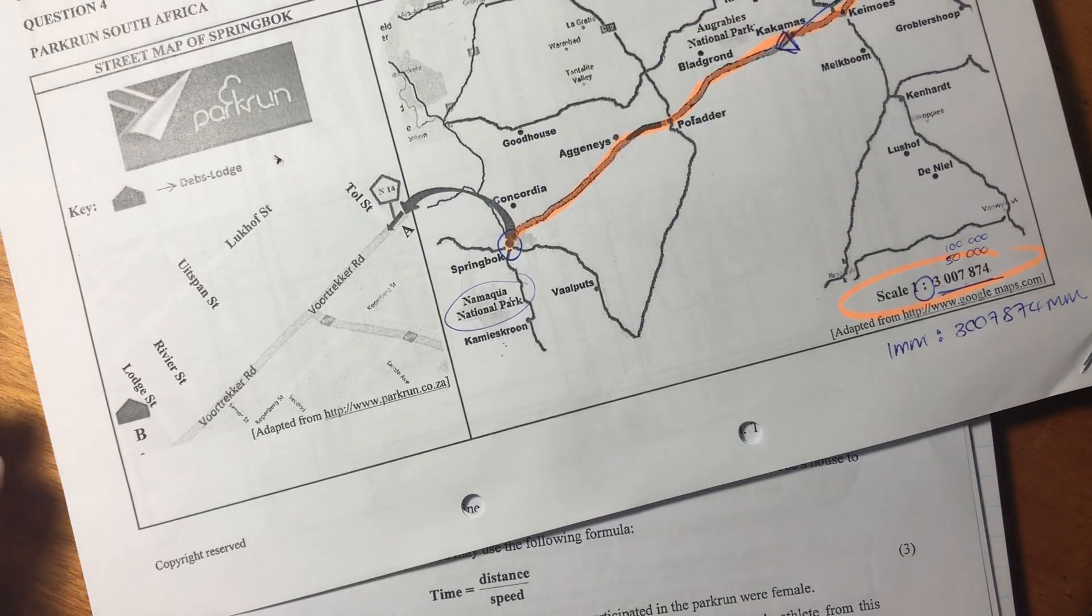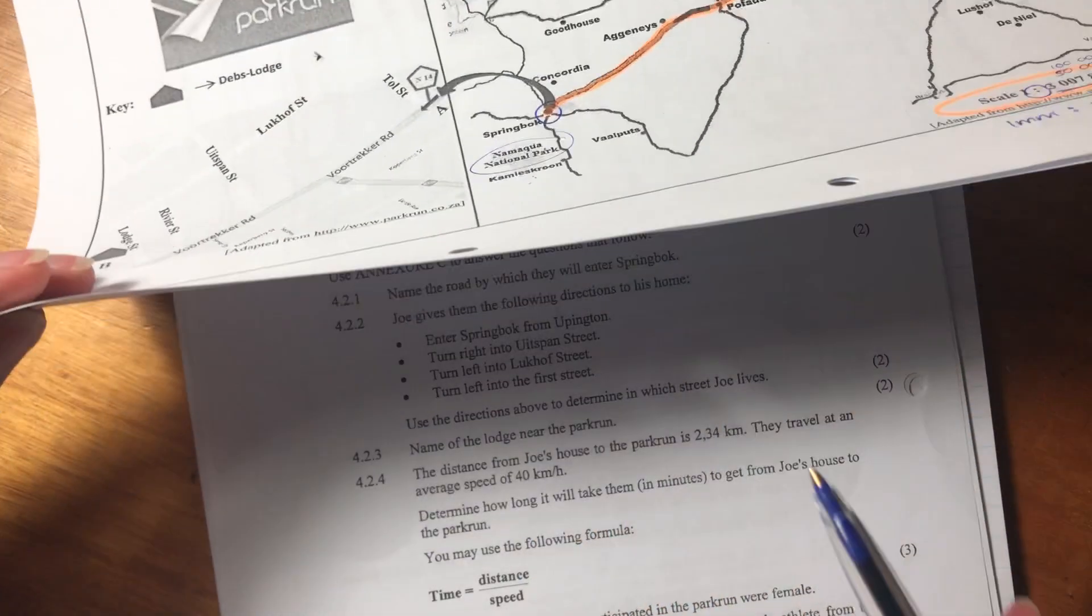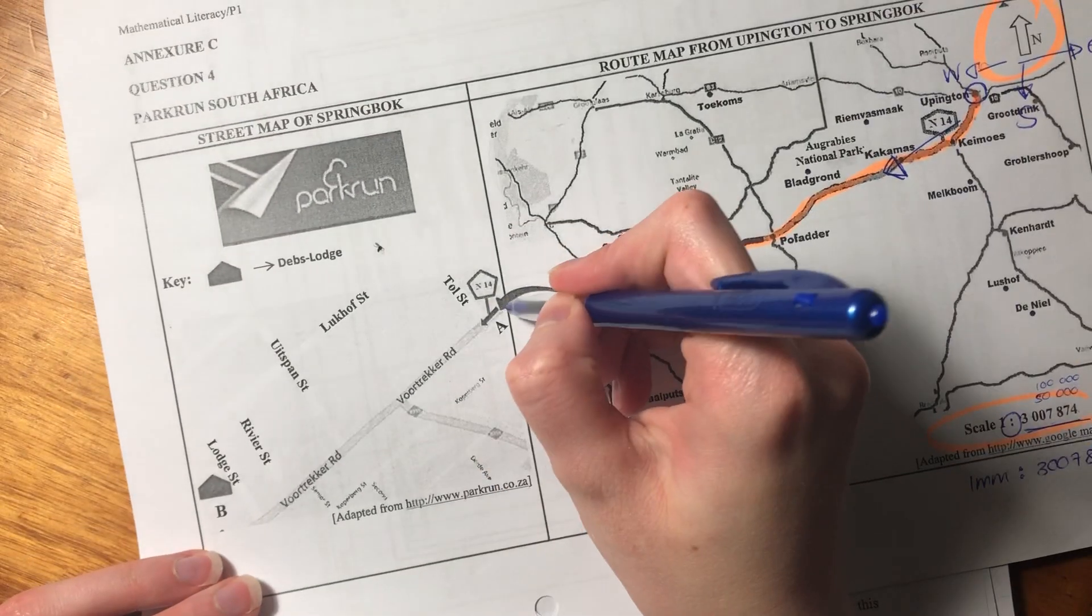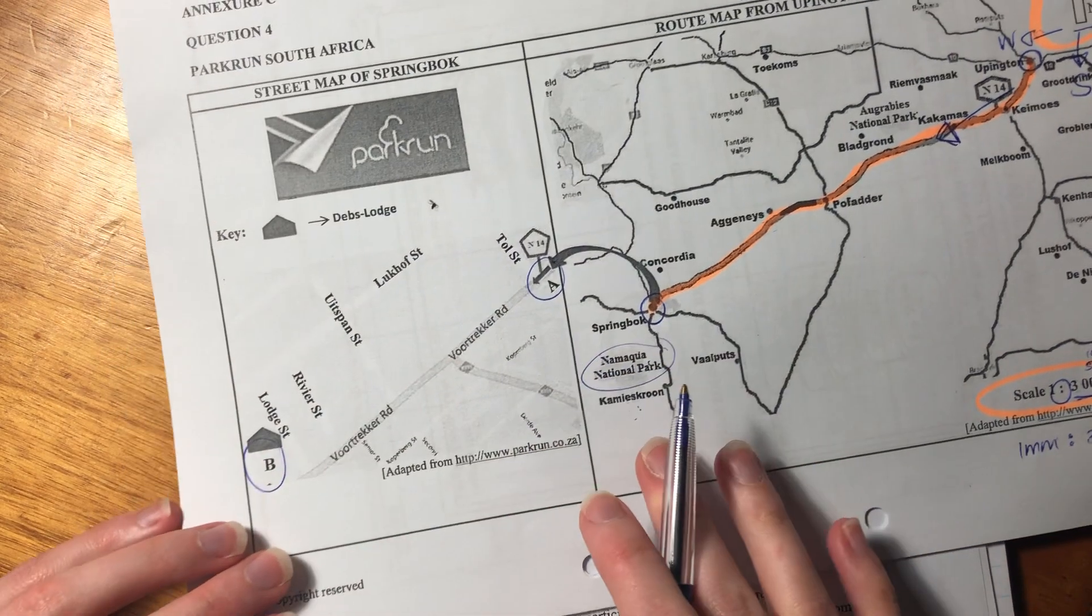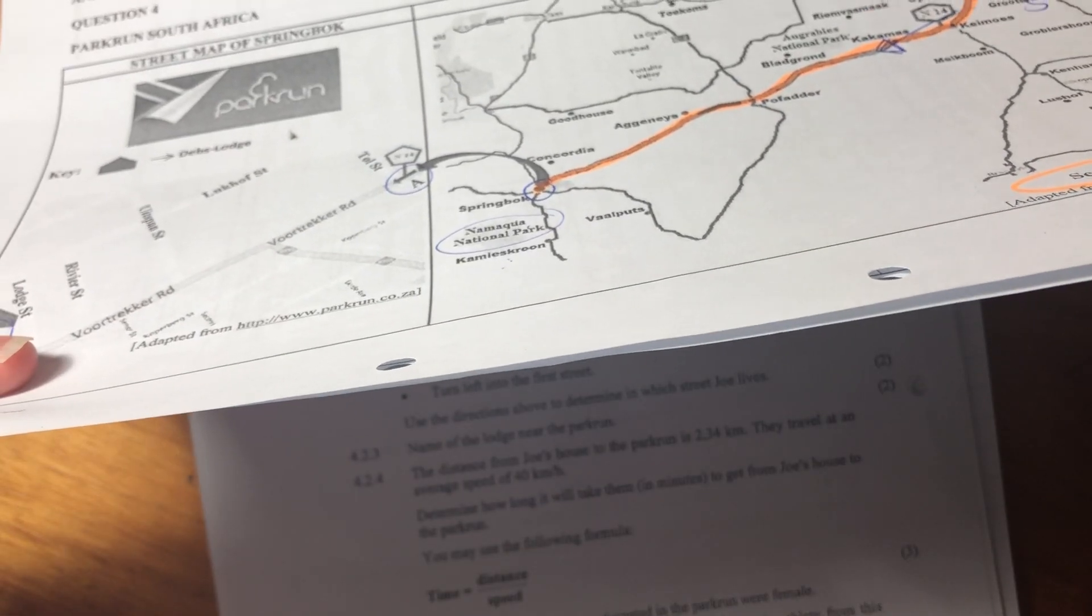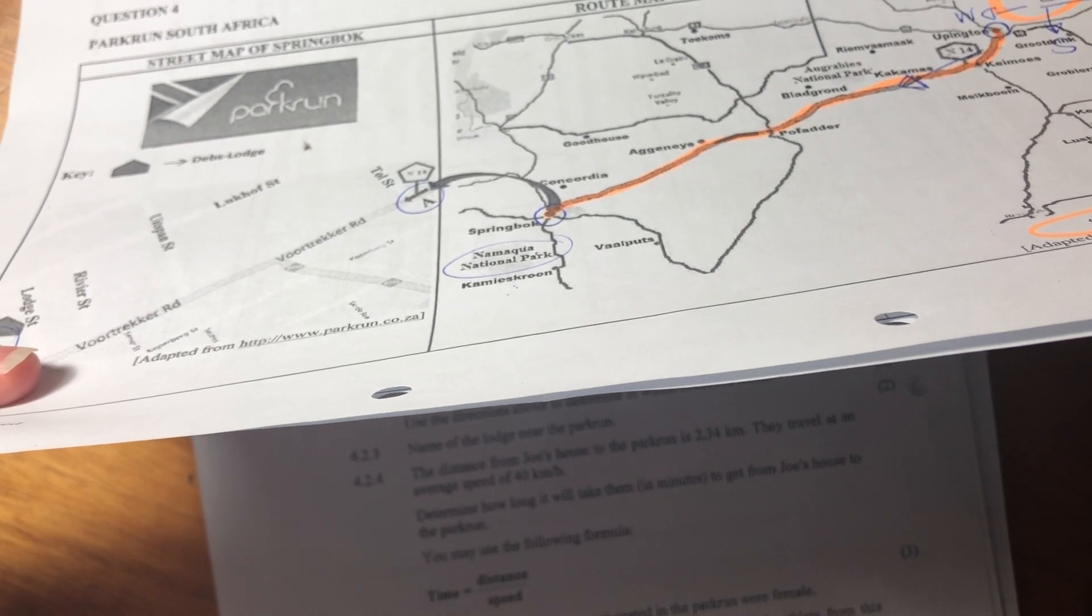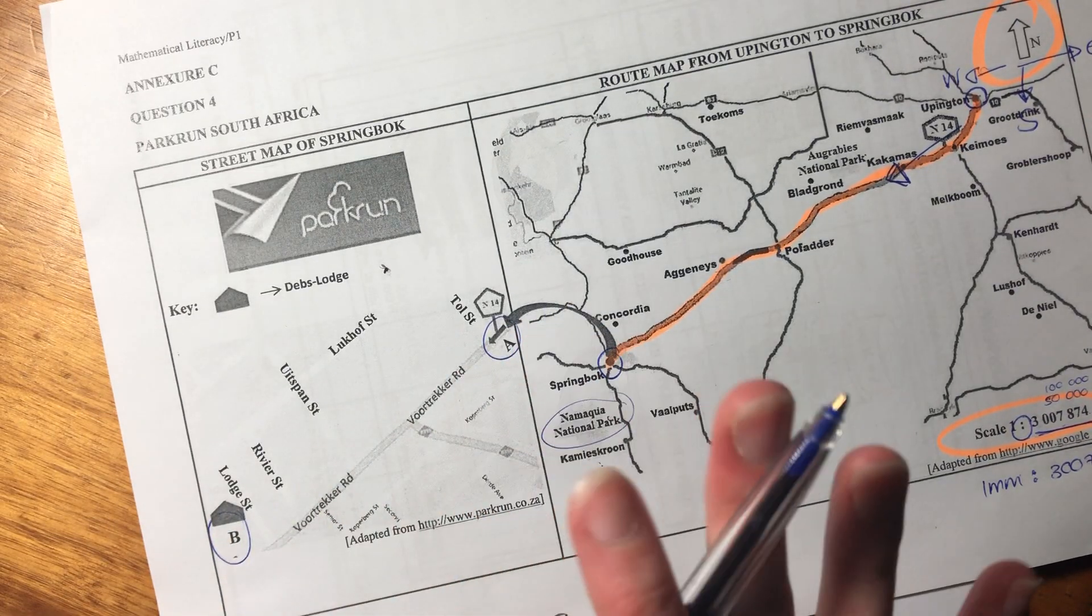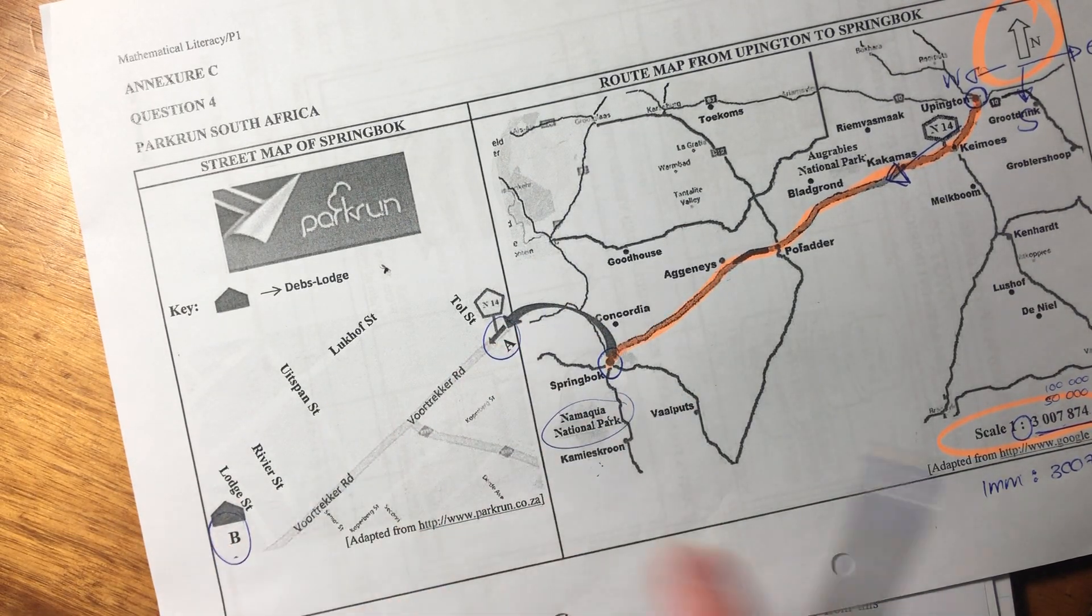Okay, so they said we're entering Springbok. So they're entering Springbok here, and this is where the parkrun is over here. A and B. And where do they have to pick up their friend? Must first pick up Joe, a fellow runner, before. Oh, so they just have to pick him up. It doesn't say where he is, but they're going from A to B.